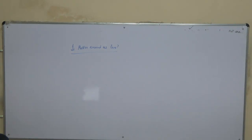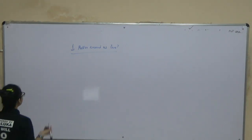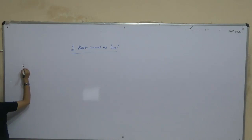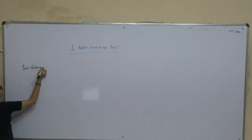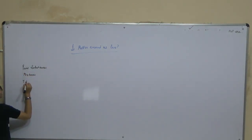Welcome back students. We were dealing with the chapter 'Is Matter Around Us Pure?' Let me give you a quick revision. First of all, we dealt with the definition of pure substances. Then we covered what mixtures are, and then the types of mixtures.